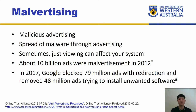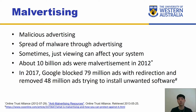About 10 million ads were malvertisements back in 2012. This has been reduced significantly through efforts by large IT companies like Google, Microsoft, Yahoo, and so forth. In 2017, Google blocked about 79 million ads with redirections and removed 48 million ads trying to install unwanted software. However, although millions of malvertisements are being removed, billions are still active and can't always be detected.